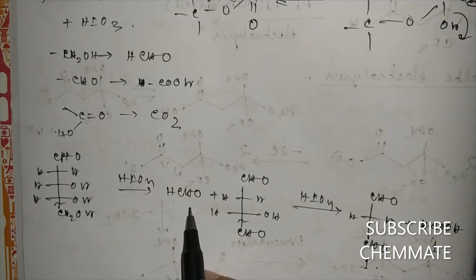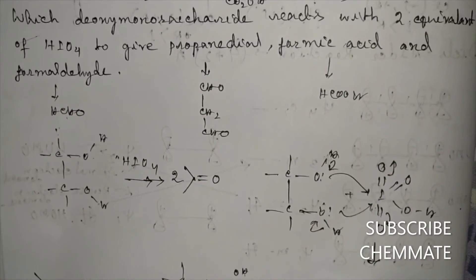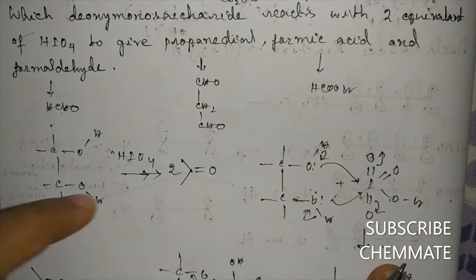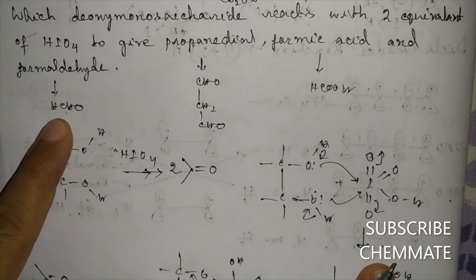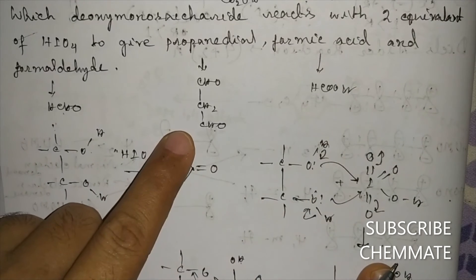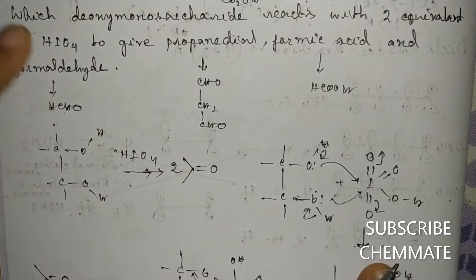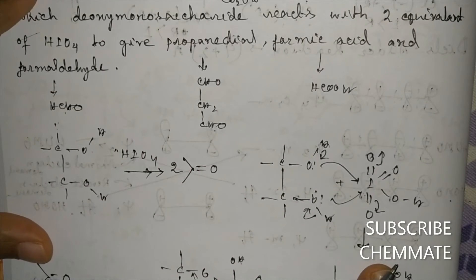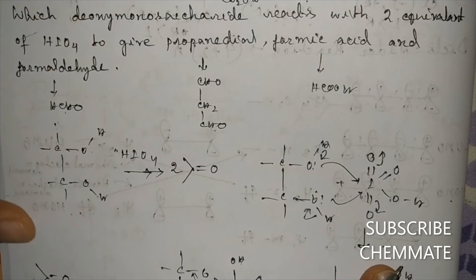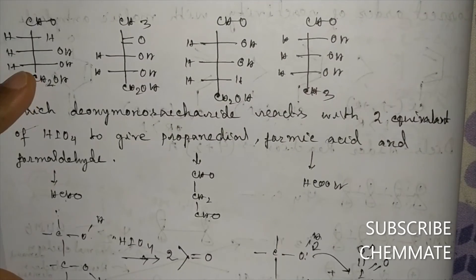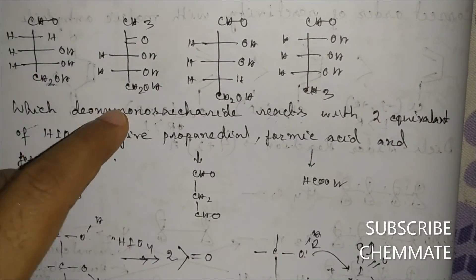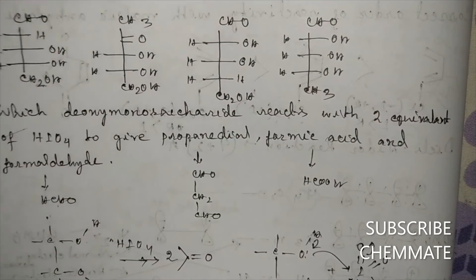This molecule gives one formaldehyde and one propenedial (two aldehyde groups). However, our required condition was one formaldehyde, one formic acid, and one propenedial. So our answer includes this monosaccharide structure, and we will check the remaining three molecules.